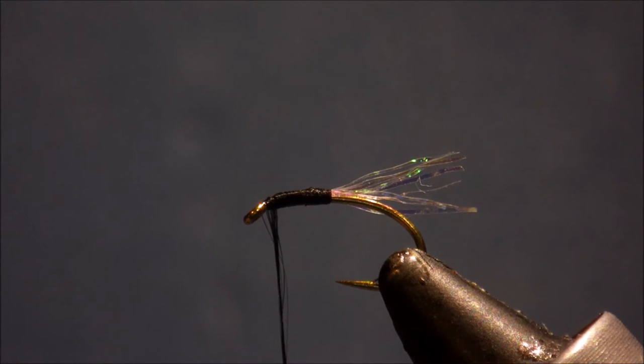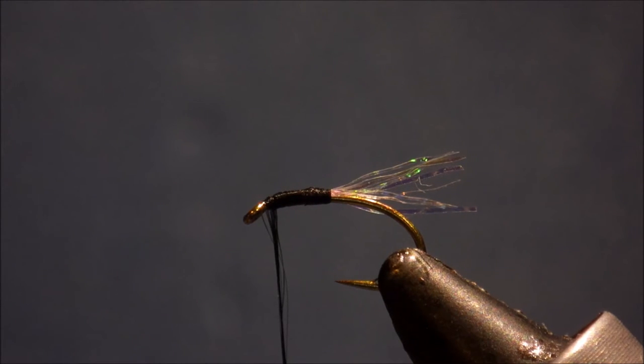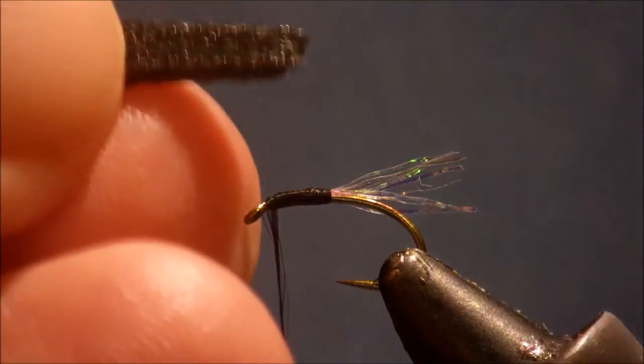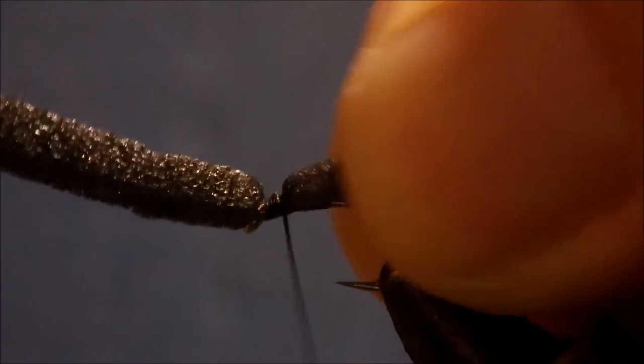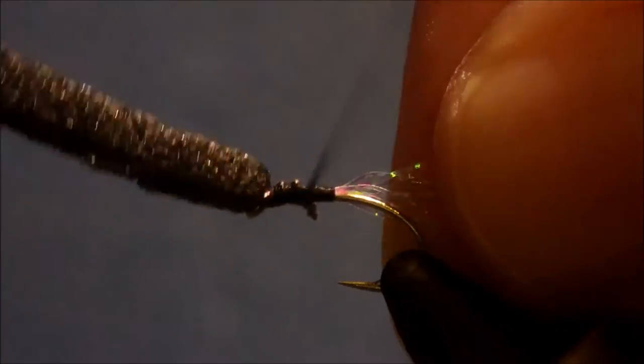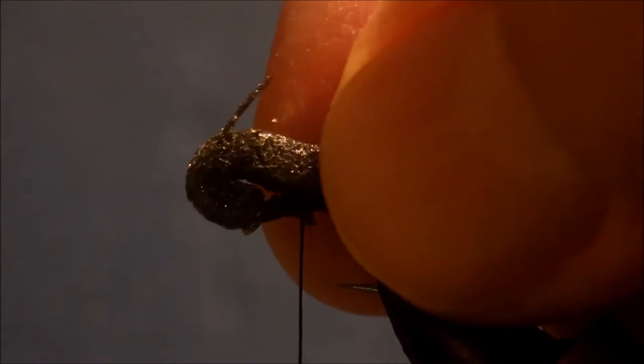I'm going to take some black foam, just got a strip that I've cut from a block. Just going to catch that in nice and tight, wind back, and just tear away the excess like this. There's your nice taper. Then take your lump of foam and fold it forwards to create a nice wee bump.